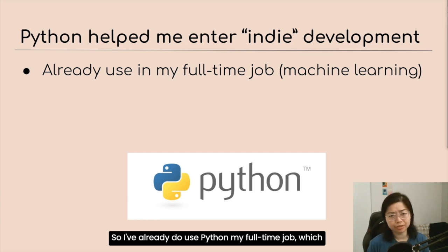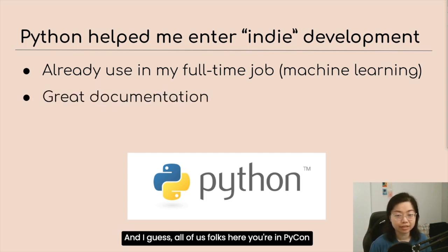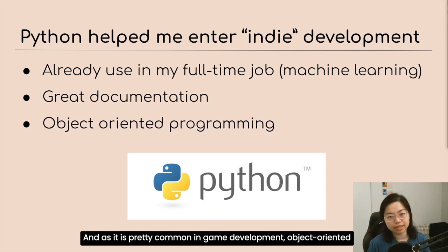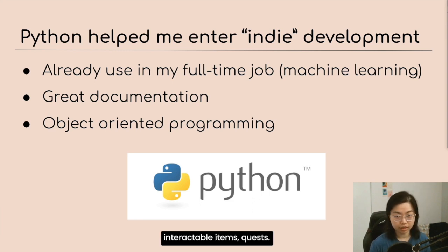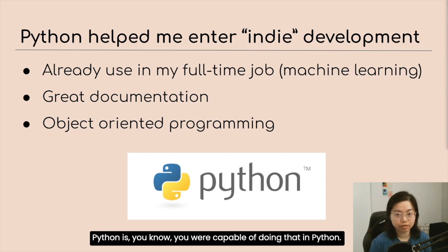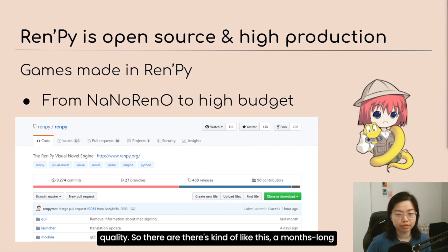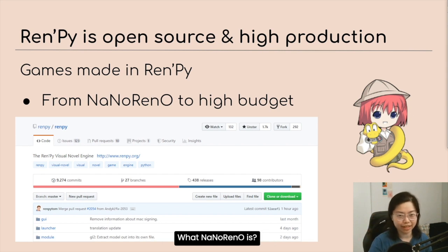I already use Python in my full-time job in machine learning. As folks here at PyCon know, Python has pretty good documentation. Object-oriented programming is a big thing in game development because of the way you design objects, characters, interactable items, and quests — and Python is capable of doing that. RenPy is an open source engine where you can make high production quality games. There's a month-long hackathon called Nano Reno for making short games, but there are also really high-budget games made in RenPy. The main developer's philosophy was to make the best way to create visual novels or narrative driven games and give it away for free, and I think he's done a great job at that.